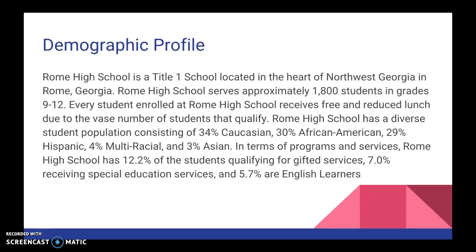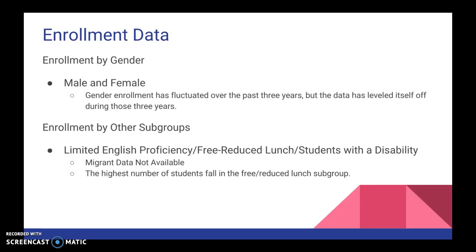In terms of programs and services, Rome High School has 12.2% of its students qualifying for gifted services, 7% receiving special education services, and 5.7% are English language learners. The enrollment data is broken up into enrollment by gender and enrollment by other subgroups — limited English proficiency, free and reduced lunch, and students with disabilities. There is no migrant data available, but the highest number of students fall in the free and reduced lunch category.